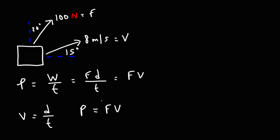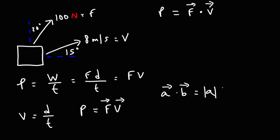Notice that we're multiplying the force vector and the velocity vector. The instantaneous power is a scalar quantity equal to the dot product of the force and velocity vectors. The dot product of two vectors equals the product of their magnitudes times the cosine of the angle between them, so power equals force times velocity times cosine of the angle between them. This is the fast way of getting the answer, and we're going to do it two ways.